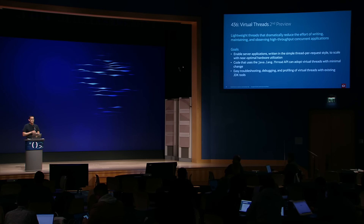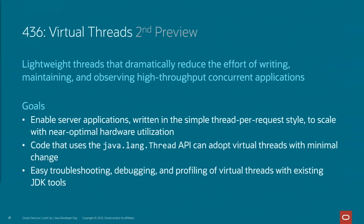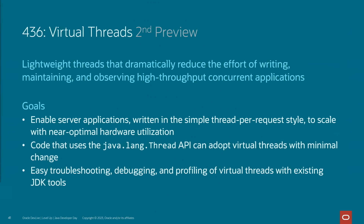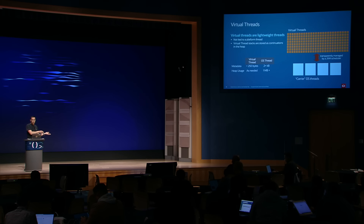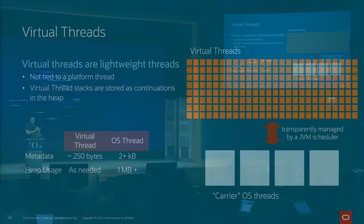JDK 20 brings back virtual threads for a second preview. Virtual threads are lightweight threads that allow a Java developer to continue using the familiar one-thread-per-task model, so you can write code that is easy to understand and maintain. From a developer point of view, a virtual thread is very similar to a Java thread, but behind the scenes it is no longer tied to a single operating system thread. Virtual threads allow us to achieve near-optimal hardware utilization without asking us to change the way that we code. Pretty straightforward.